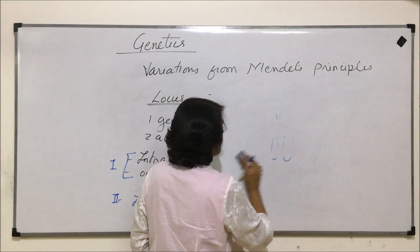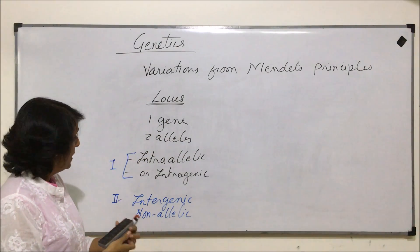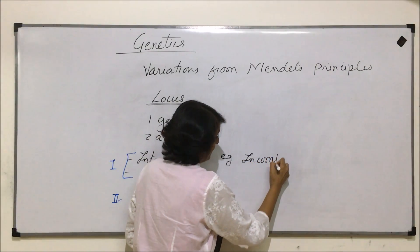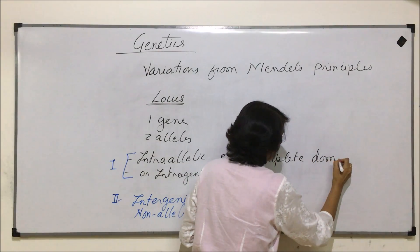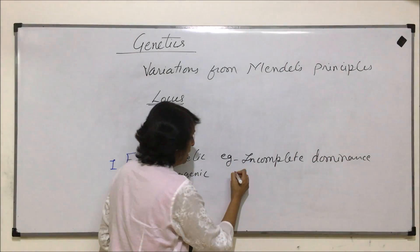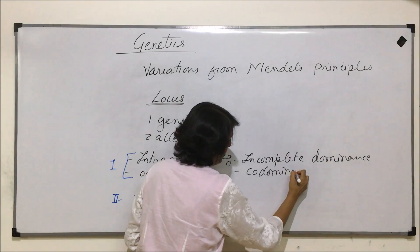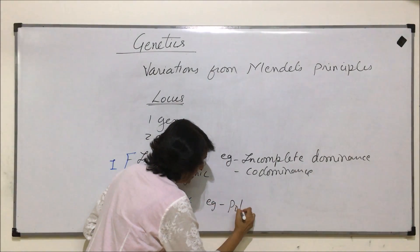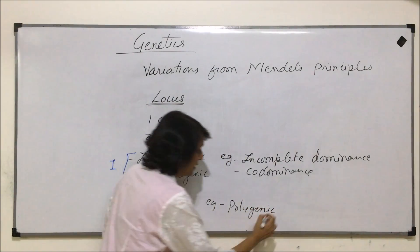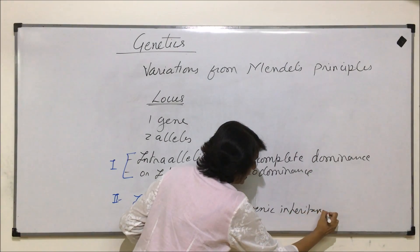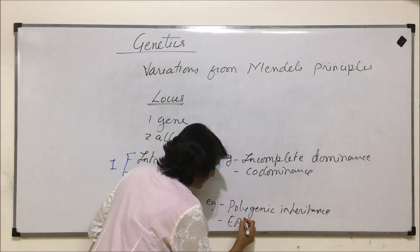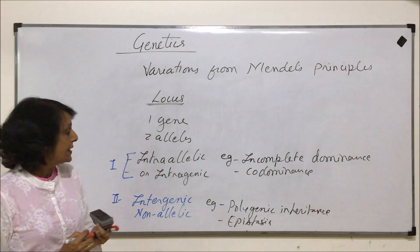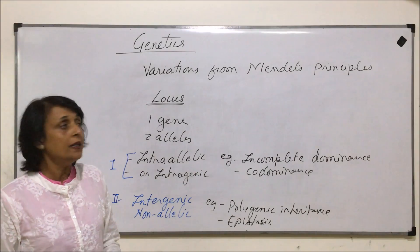Let us write down a few examples we will be discussing under these variations. Under intra-allelic, we will discuss incomplete dominance and co-dominance. Under inter-genic, we will take examples such as polygenic inheritance and epistasis — both dominant and recessive. These are the variations from the normal Mendelian principle.